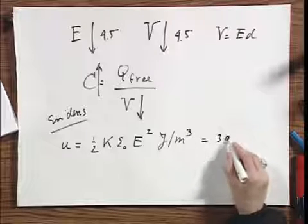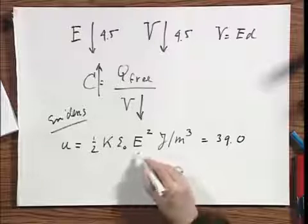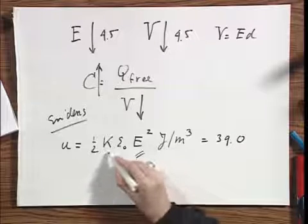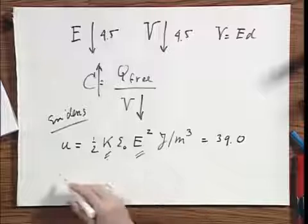It's easy to calculate how much this is. I found it to be 39.0, because I think you know E, you know K, so that is rather easy.